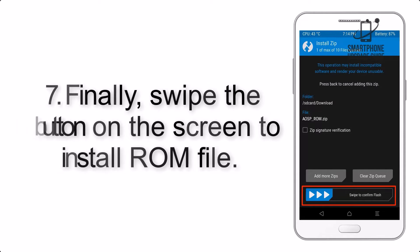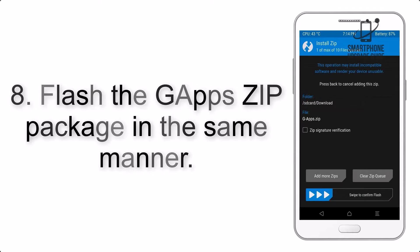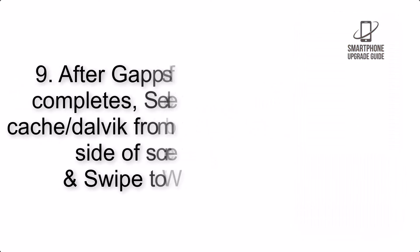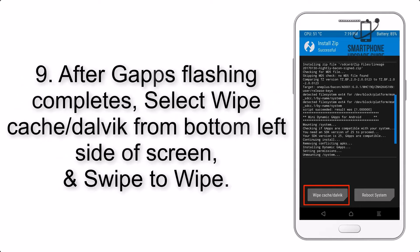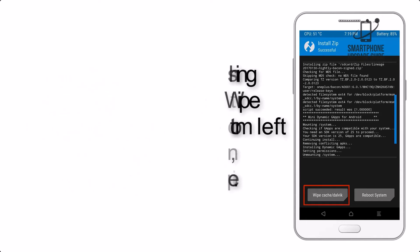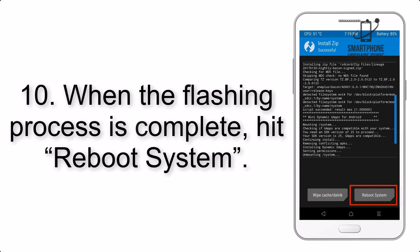Step 7: Swipe the button on the screen to install the ROM file. Step 8: Flash the GApps zip package in the same manner. Step 9: After GApps flashing completes, select Wipe Cache and Dalvik from the bottom left side of the screen and swipe to wipe.